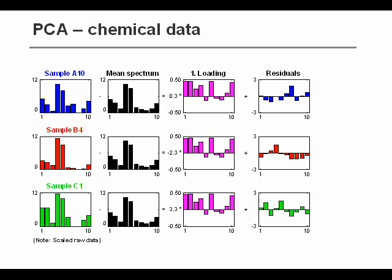But we do exactly as we did before. We try to find the first component in such a way that best describes all the different samples. And the score value will give us the amount of that loading vector in the different samples.